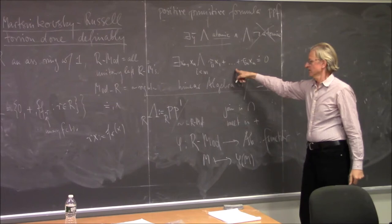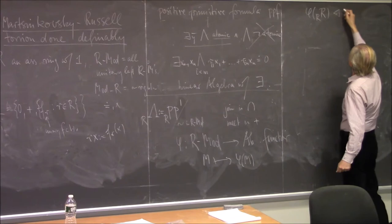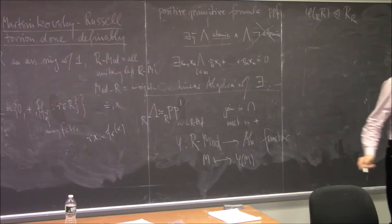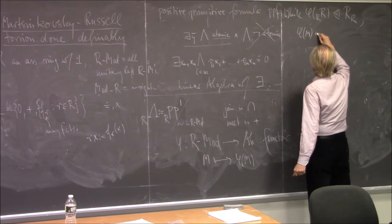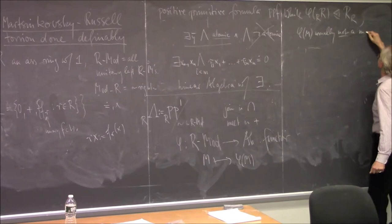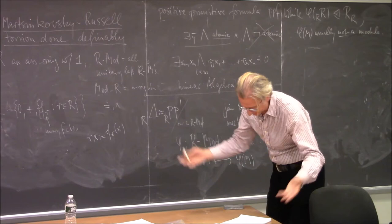In the ring itself, if you look at the ring as a module over itself, phi of R is always a right ideal — because you can multiply on the right with ring elements, but not with module elements. So phi of M is usually not a submodule. Anyway, that's the very basic terminology we need, and now we need some technical machinery. By the way, I should say this is joint work with Alex.